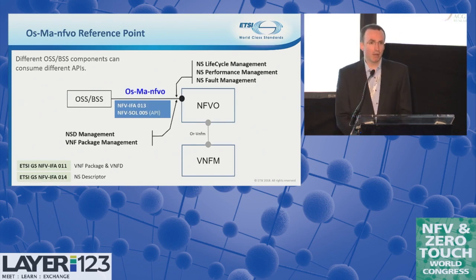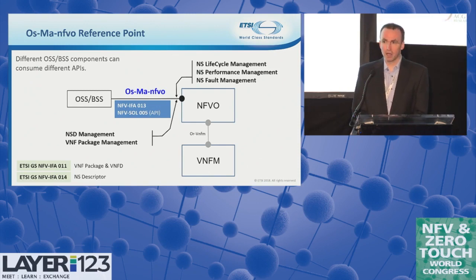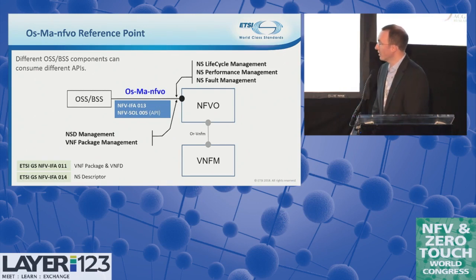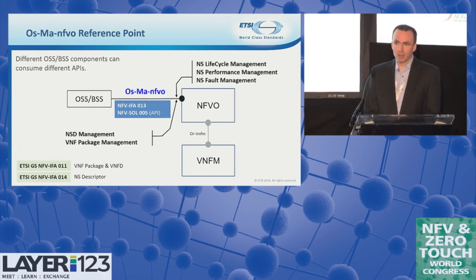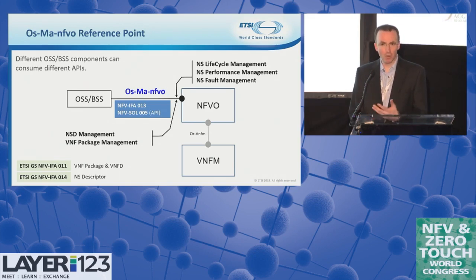It gave me great encouragement to not be the first person to have these specification numbers up on the wall today, because we've seen from the other projects that the specifications you see here are now being actively used. Just a reminder — the whole purpose of this is how to get the network service from being designed in the OSS/BSS into the orchestration layer.